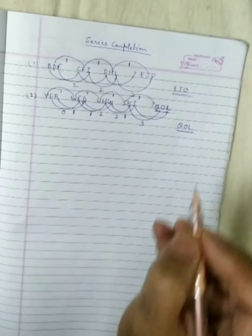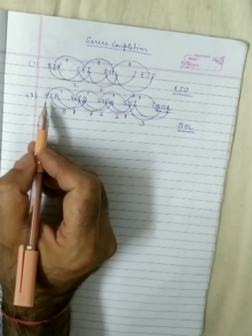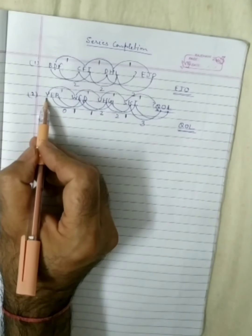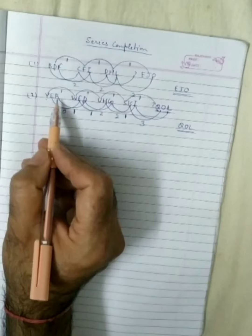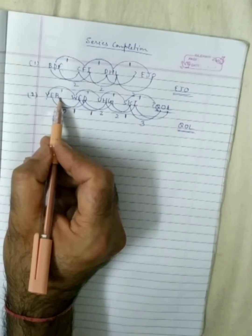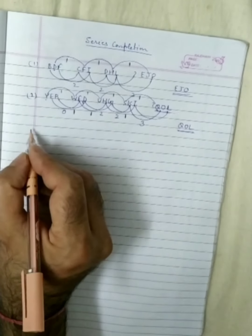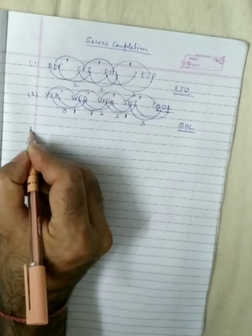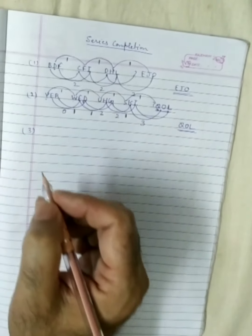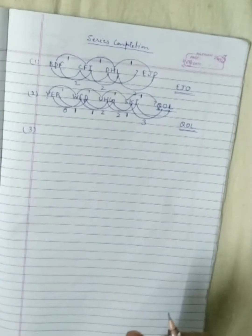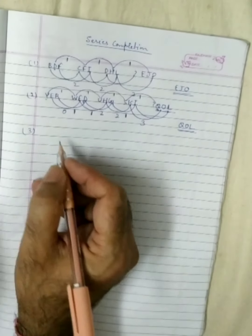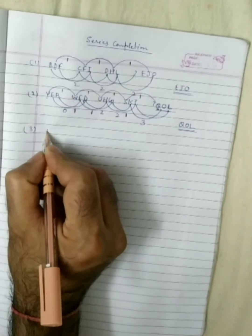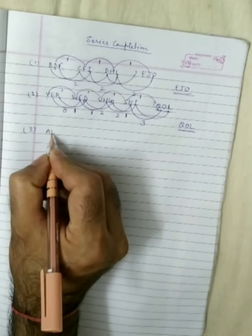Understand? You have to look at the pattern of each letter — first letter, then second, then third — and find accordingly. Third series: A, B, D / D, G, K / H, M, S / M, T, B / S, B, L. Find the missing term.